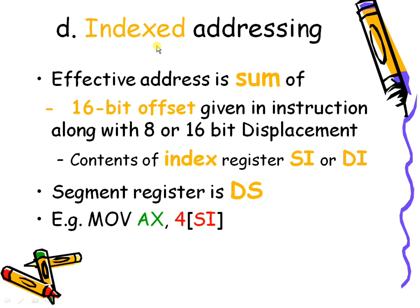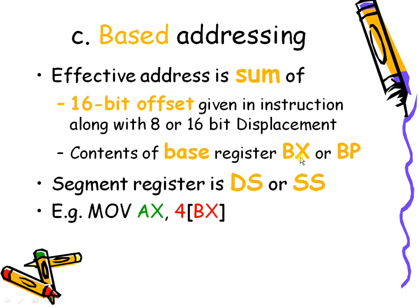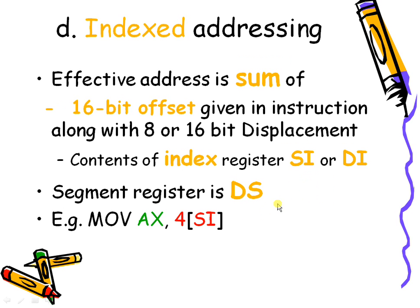Index addressing mode is similar to based addressing mode, but here only the index registers SI or DI are used. Because we are using index registers, we cannot use the stack segment — the segment register must be DS. SI and DI provide the offset address of the data segment. The value in SI is added with the displacement to give the effective address, and the contents at that address are copied into AX.